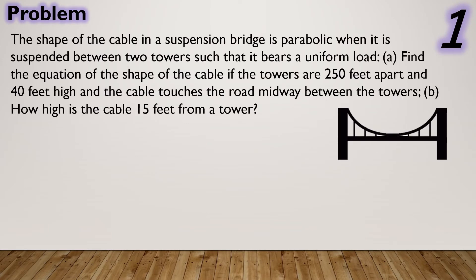The shape of the cable in a suspension bridge is parabolic when it is suspended between two towers such that it bears a uniform load. Letter A: Find the equation of the shape of the cable if the towers are 250 feet apart and 40 feet high, and the cable touches the road midway between the towers. Letter B: How high is the cable 15 feet from a tower?